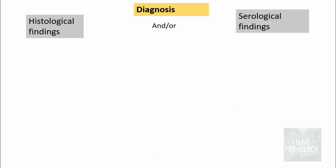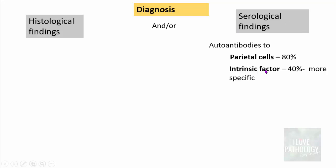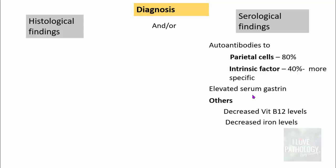How do you diagnose autoimmune atrophic gastritis? There are two important ways: by classical histological findings and/or serological findings. For serological findings, autoantibodies to parietal cells are found in 80% of cases, and autoantibodies to intrinsic factor in around 40% of cases — the latter being more specific, since parietal cell antibodies can also be seen in H. pylori-associated gastritis. You can also demonstrate elevated serum gastrin levels and deficiency of vitamin B12 and iron.